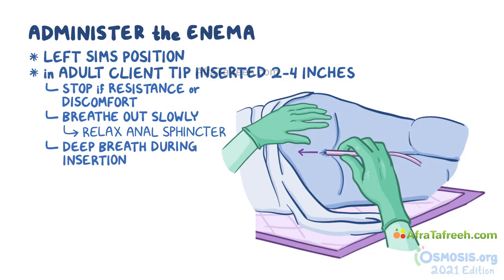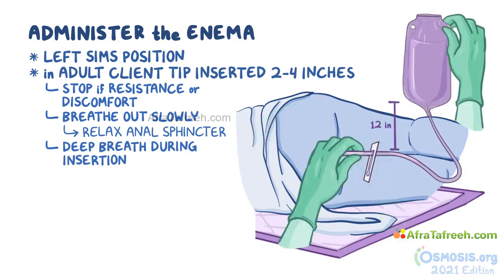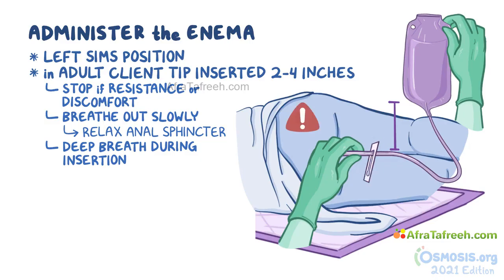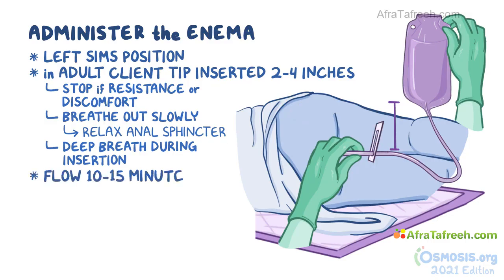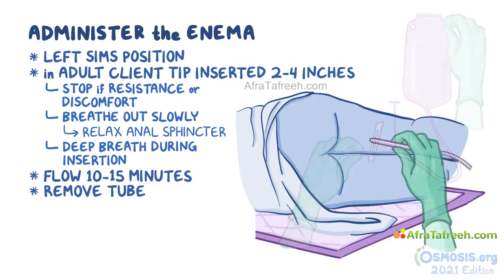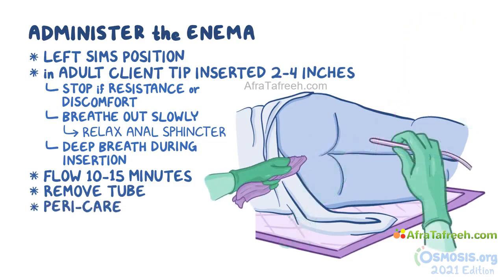After the tube is in place, the enema bag should be held about 12 inches above the level of the anus. Unclamp the tubing and allow the solution to flow out slowly. Inform the patient that they might feel some cramping and distention. However, if they complain of pain or nausea, clamp the tubing and wait for the symptoms to subside before restarting. Let the enema flow for around 10 to 15 minutes, during which time the enema tube should be held in place. After the solution has been instilled, gently remove the tube, provide peri care, and reposition the client into a more comfortable position.